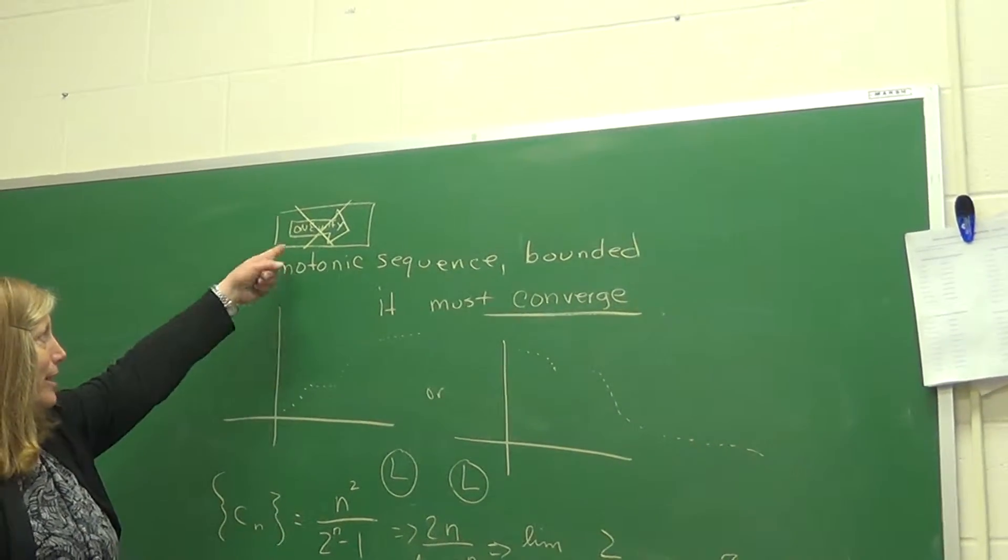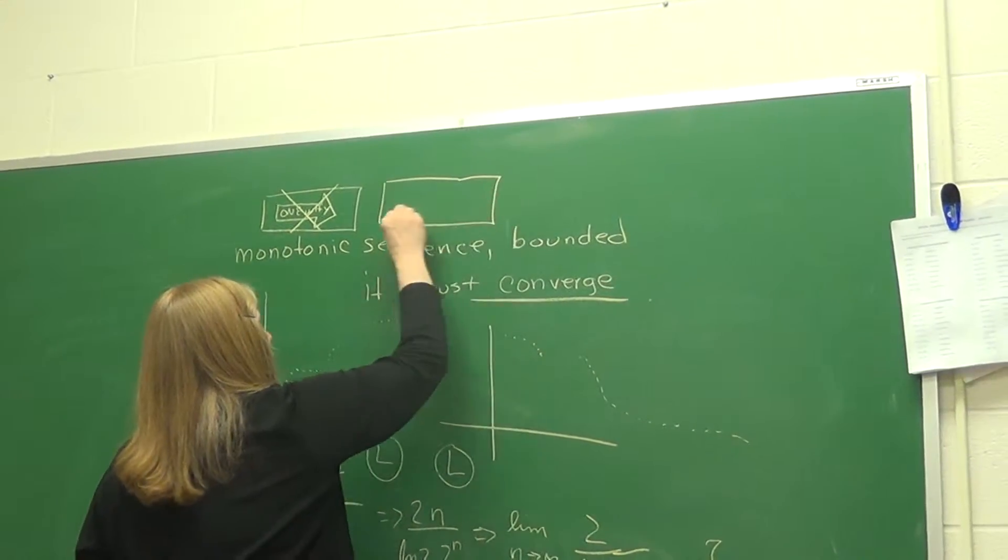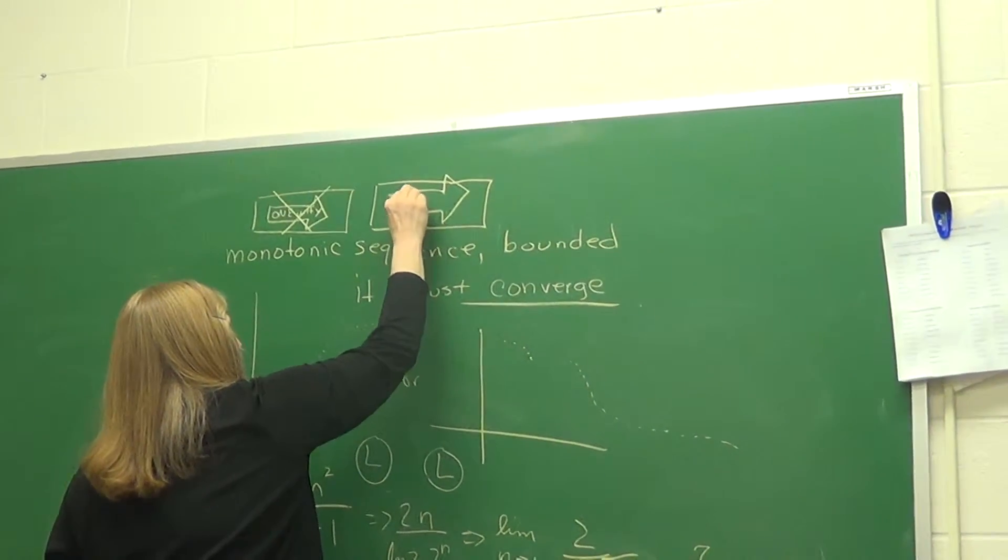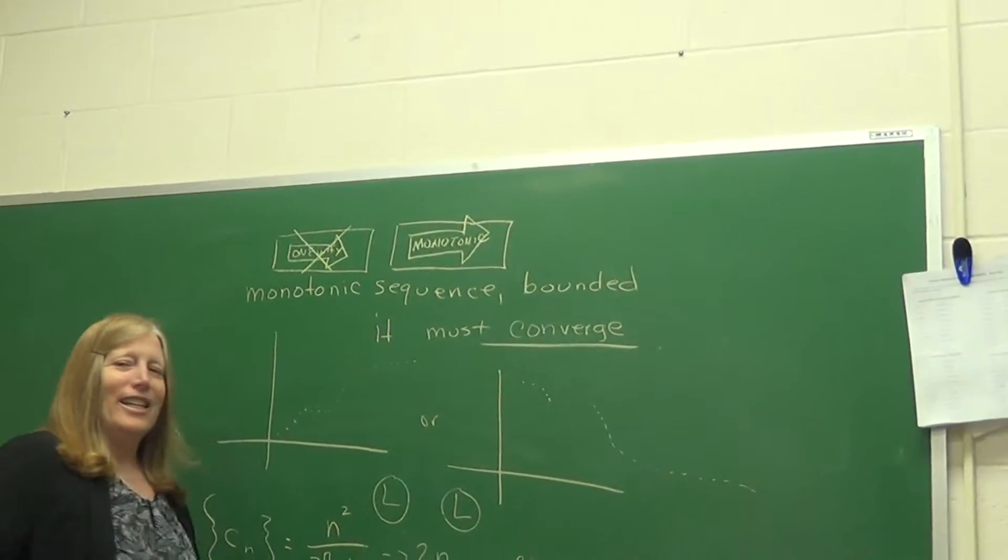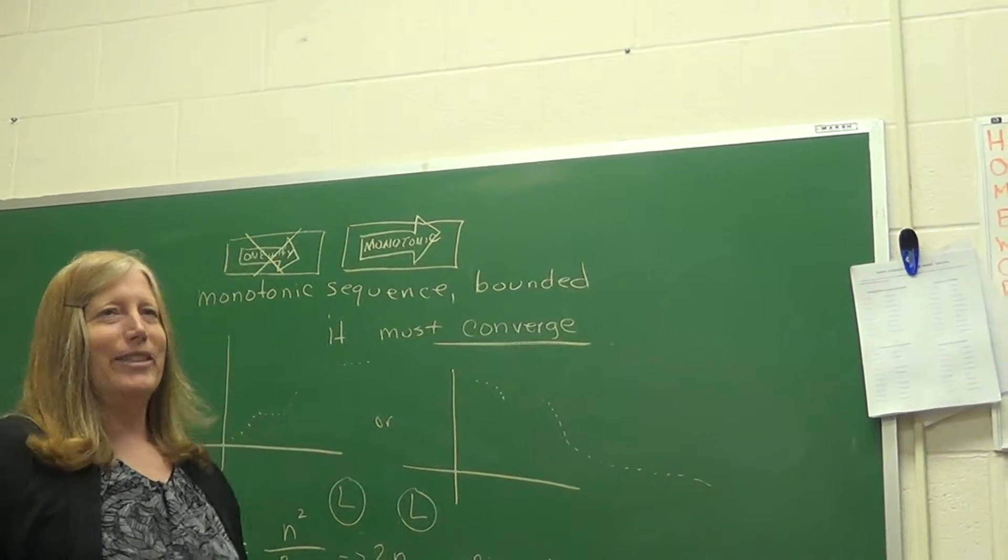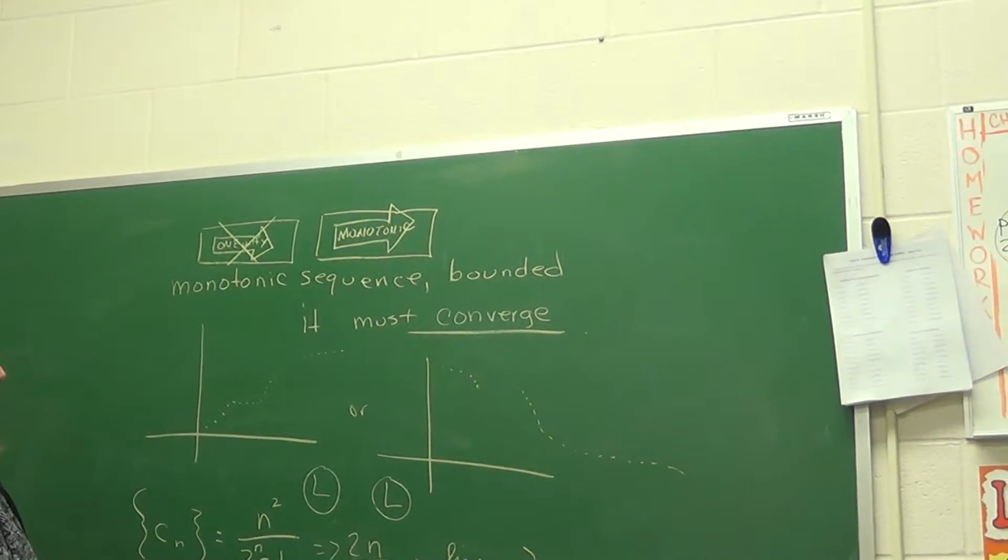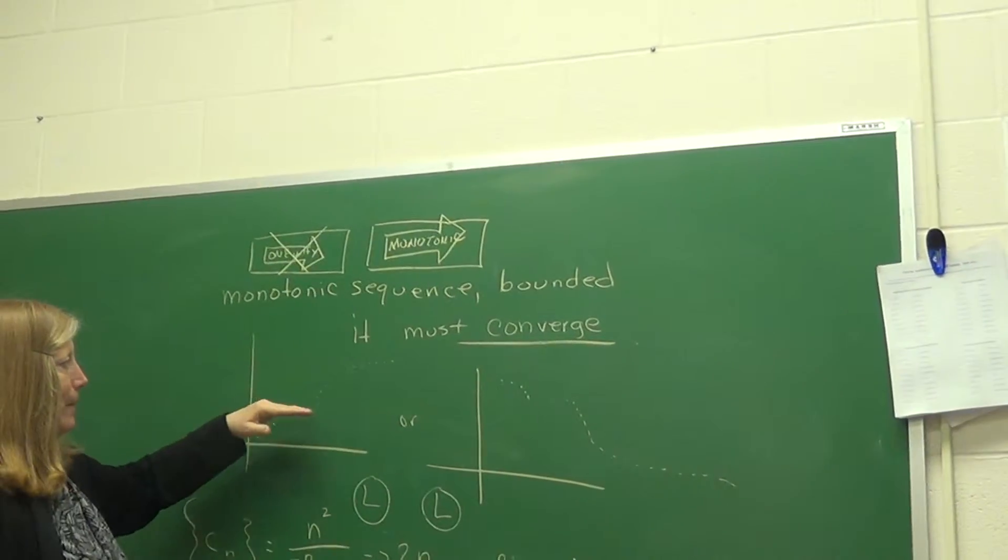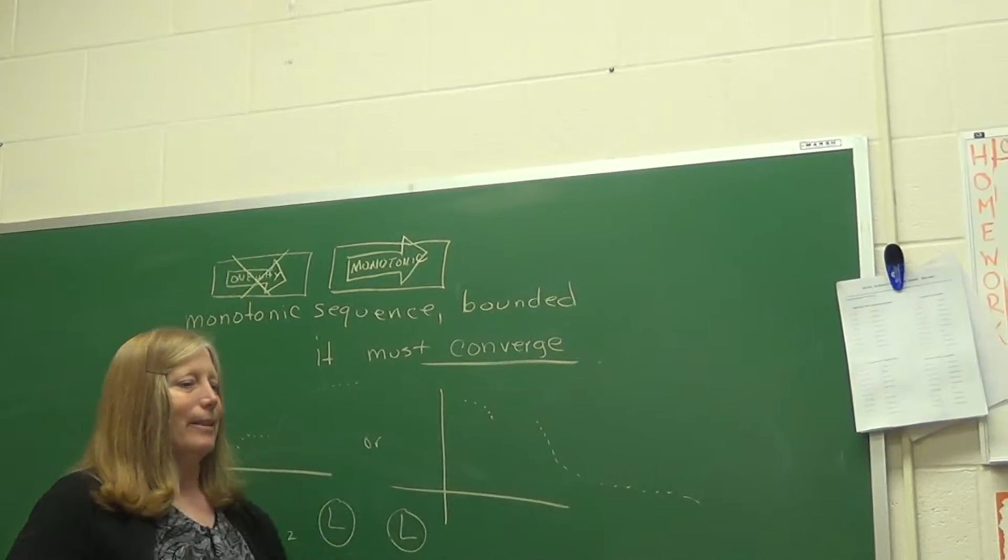So this is monotonic. So it is a one way street. It's either increasing, always. So one way, except in sequence land, their street signs don't say one way. They say monotonic. So that means that it's going to go, it's always increasing or it may be flat. So it's non-decreasing and this is non-increasing. So that's what monotonic means.